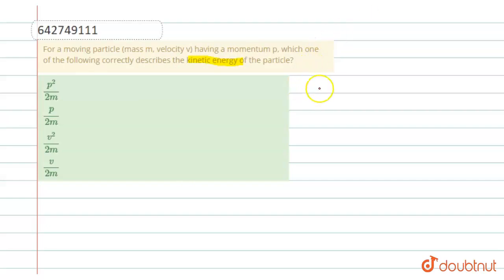So we know that kinetic energy of particle is equals to half mv square and momentum is equals to m into v.